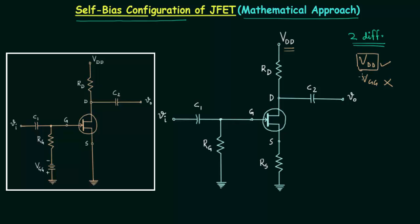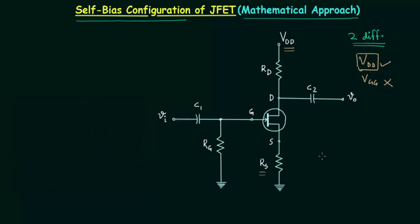So we can say self-bias configuration is better than fixed bias configuration because we only need one DC supply. The second difference is resistance RS — in self-bias configuration we have one extra resistance, the source resistance RS.